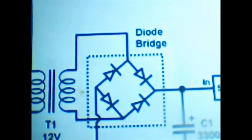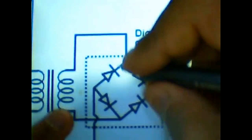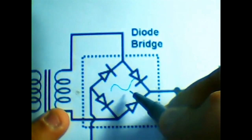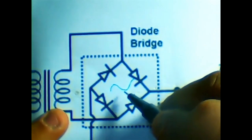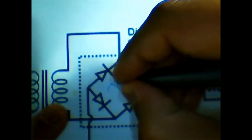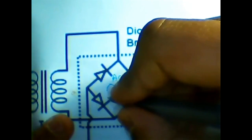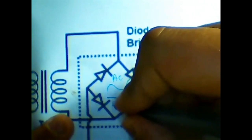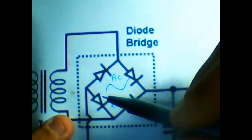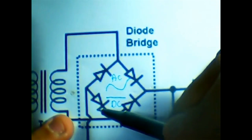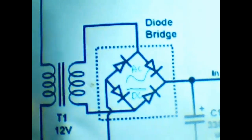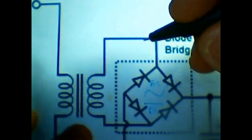Here we have what is called a rectification block. What we are going to do here is actually convert the alternating sine wave from the AC voltage to a constant DC voltage. So here you have the AC, and here you have a constant DC.